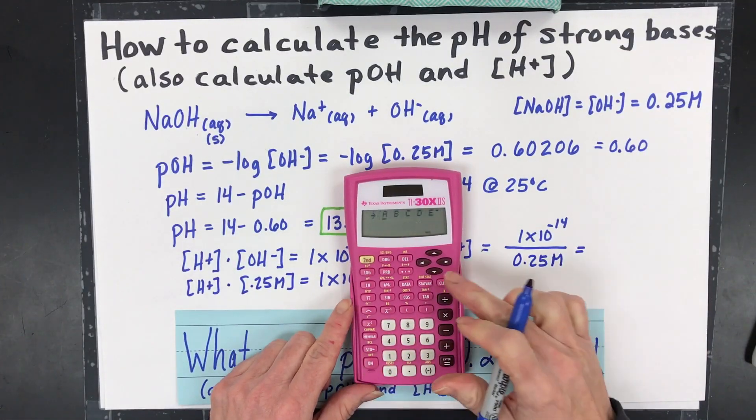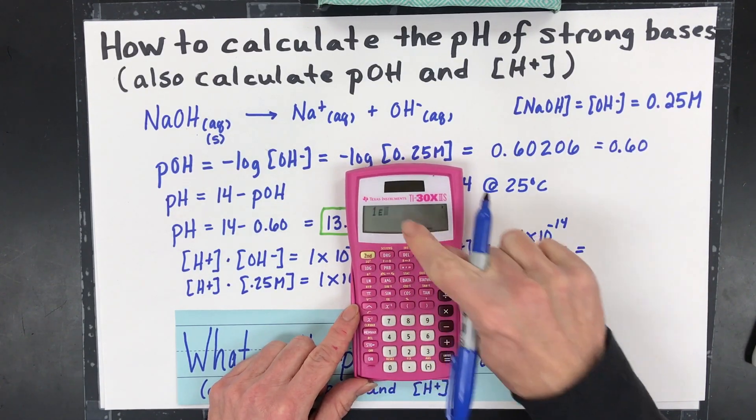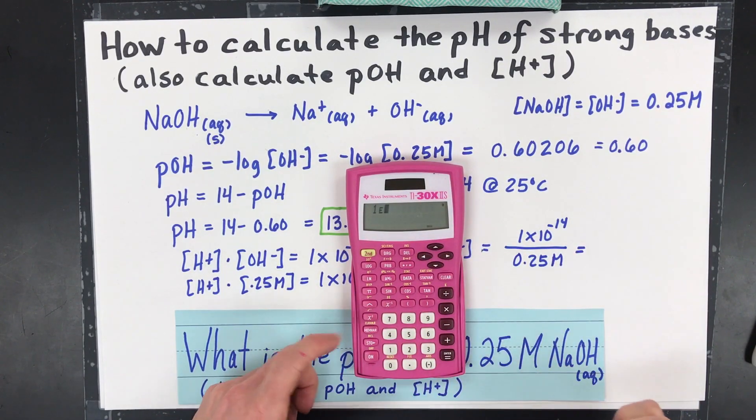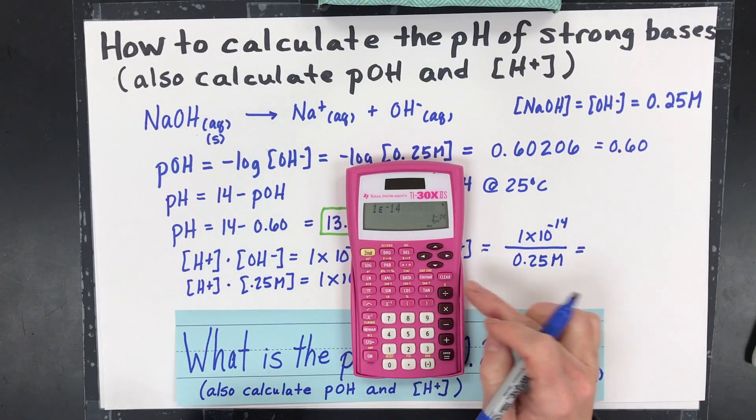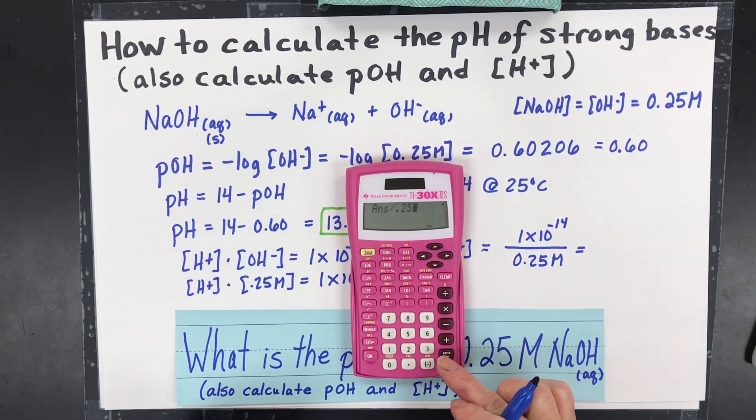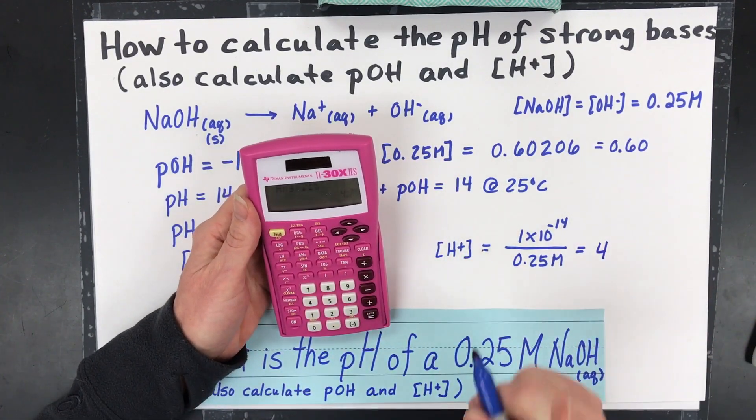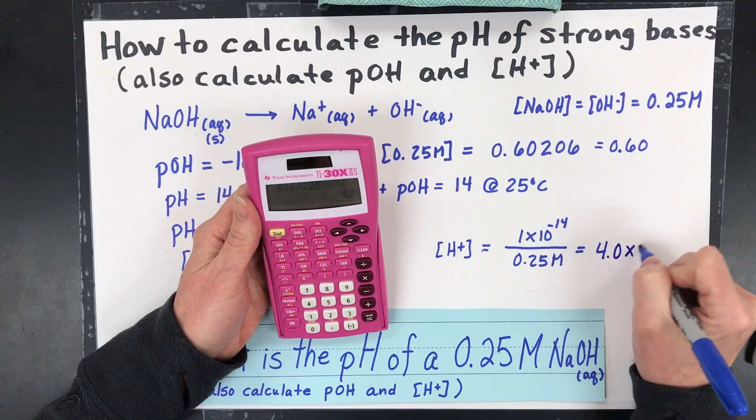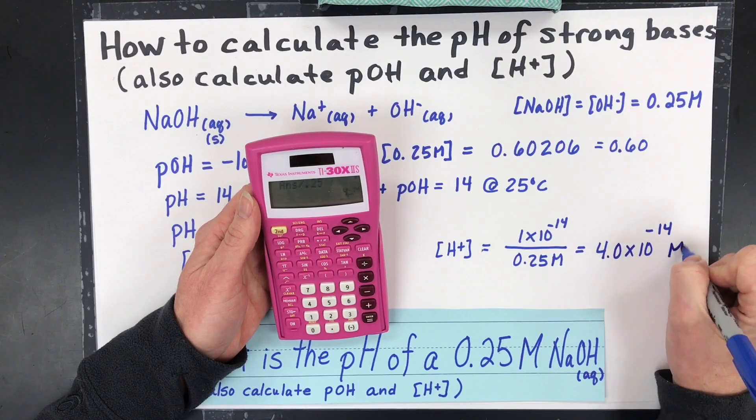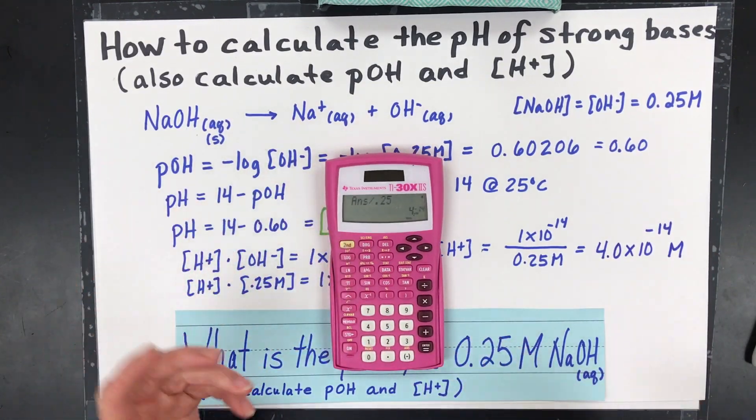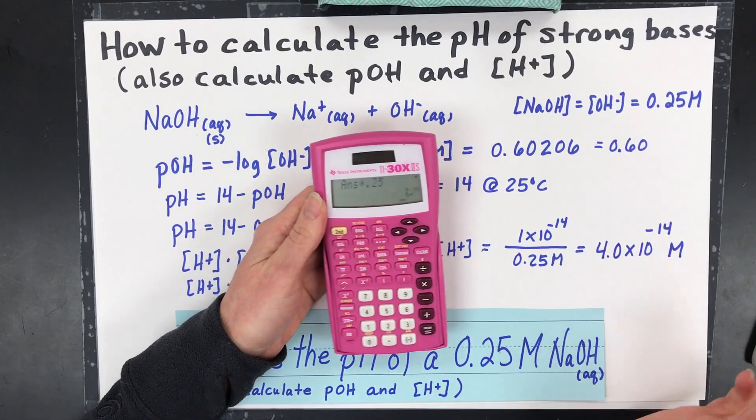Grab that calculator again. Another thing that you've got to get used to is putting in scientific notation correctly. So 1, and then I've got to go 2nd EE on this calculator. It's the yellow there. Negative 14. I like to hit equals. I'm kind of weird like that. But I want to see that number and make sure I didn't do anything wrong. Divided by 0.25. There we go. So we have 4. And again, my calculator got rid of some digits because I can keep two sig figs. 4.0 times 10 to the minus 14 molarity. And if you're worried, you can multiply that back, multiply it by times 0.25, and you'll get one times 10 to the negative 14th.